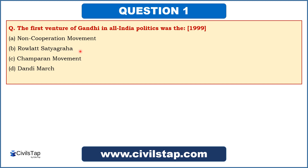We have already read about the Champaran movement, but the question asks about all-India politics level. The first venture was Champaran movement, but it was not on an all-India politics level — it was confined to the district of Bihar. So Champaran cannot be the answer. Among the remaining options A, B, or D, the answer is option B: Rowlett Satyagraha was the first venture of Gandhi in all-India politics.